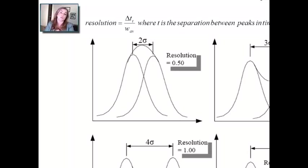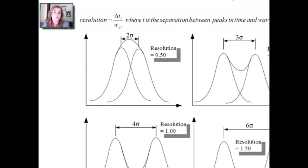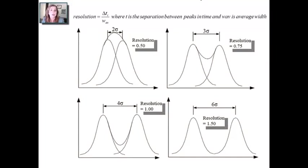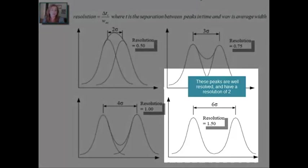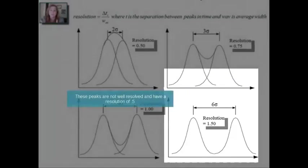And when you do that, you're going to calculate a number, which is the resolution. If that resolution is larger than about 1.5, in some cases 2, then you're going to say that you have a well-resolved set of peaks. If on the other hand, as you can see in these top examples, the resolution is only 0.5 or 0.75, your peaks are not really distinct.